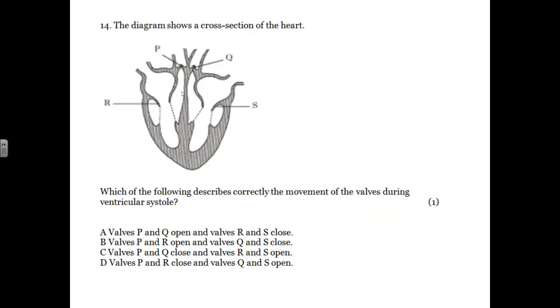Finally, the diagram shows a cross-section of the heart. Which of the following describes correctly the movement of the valves during ventricular systole. So S and R would close, P and Q would open. So S and R close, P and Q would open. So it's A.